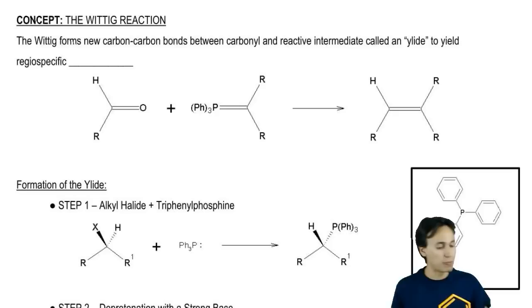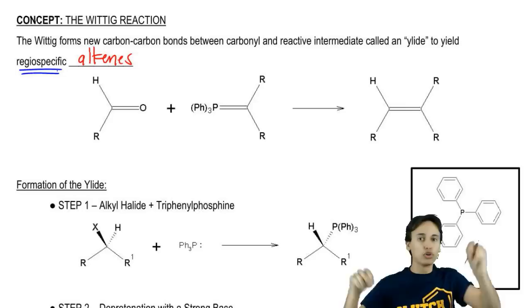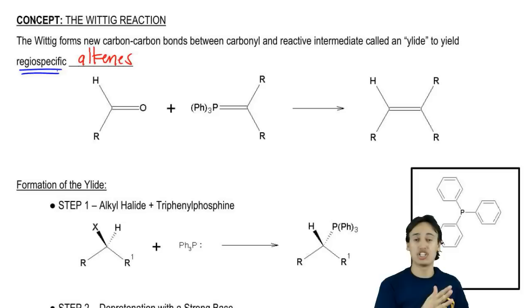What do I mean by regio-specific? Regio just talks about locations. It just means that I can make a custom alkene with whatever R groups on it I want. In this case, I can pick exactly where I want those R groups to be.